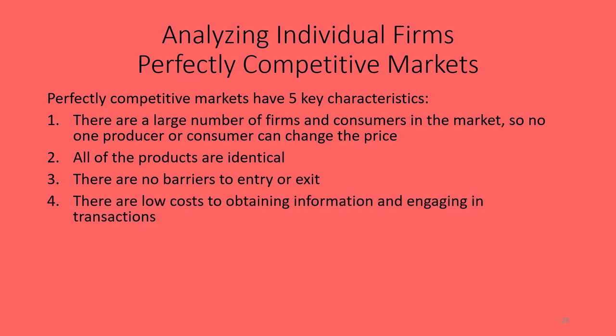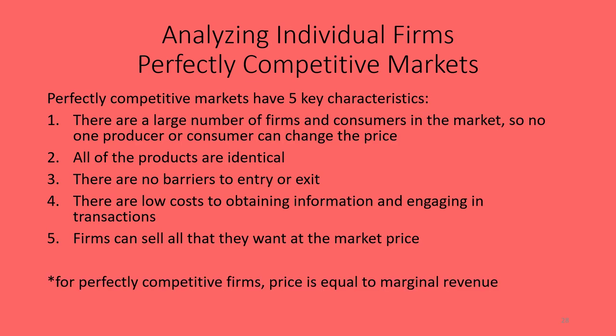Fourth, there are low costs to obtaining information and engaging in transactions — it's easy for consumers and producers to find each other. Fifth, firms can sell all they want at the market price. They don't get to choose the price; they have to sell at whatever the market price is, but they do get to choose how much to produce and sell. For these perfectly competitive price taker firms, price equals marginal revenue — the price of the product is equivalent to the marginal revenue they receive from selling it.